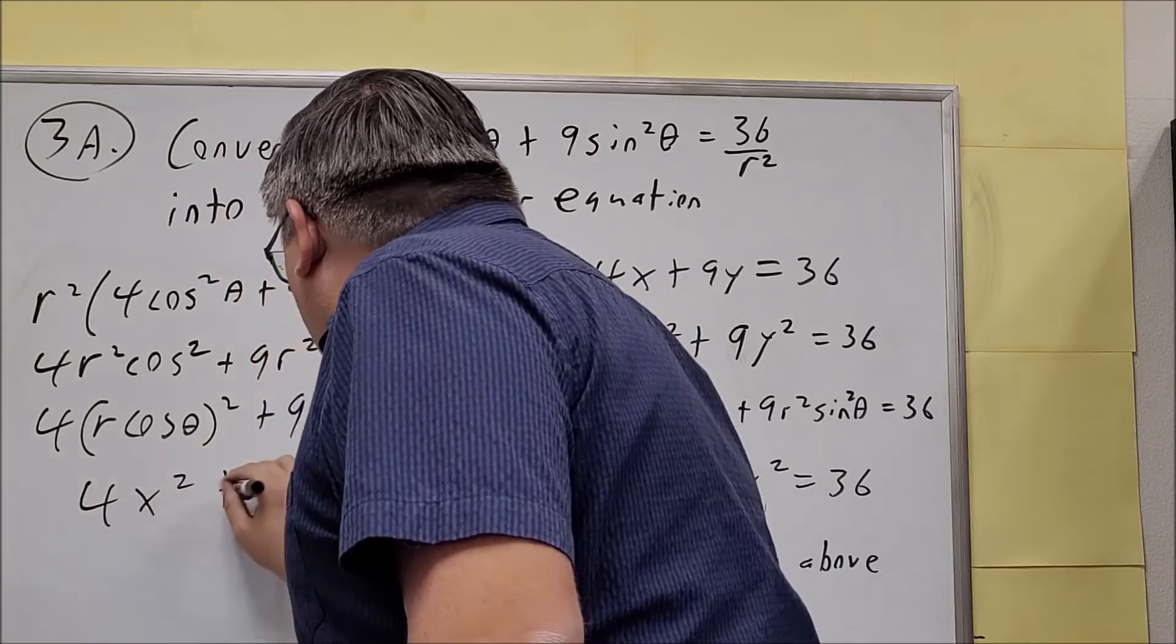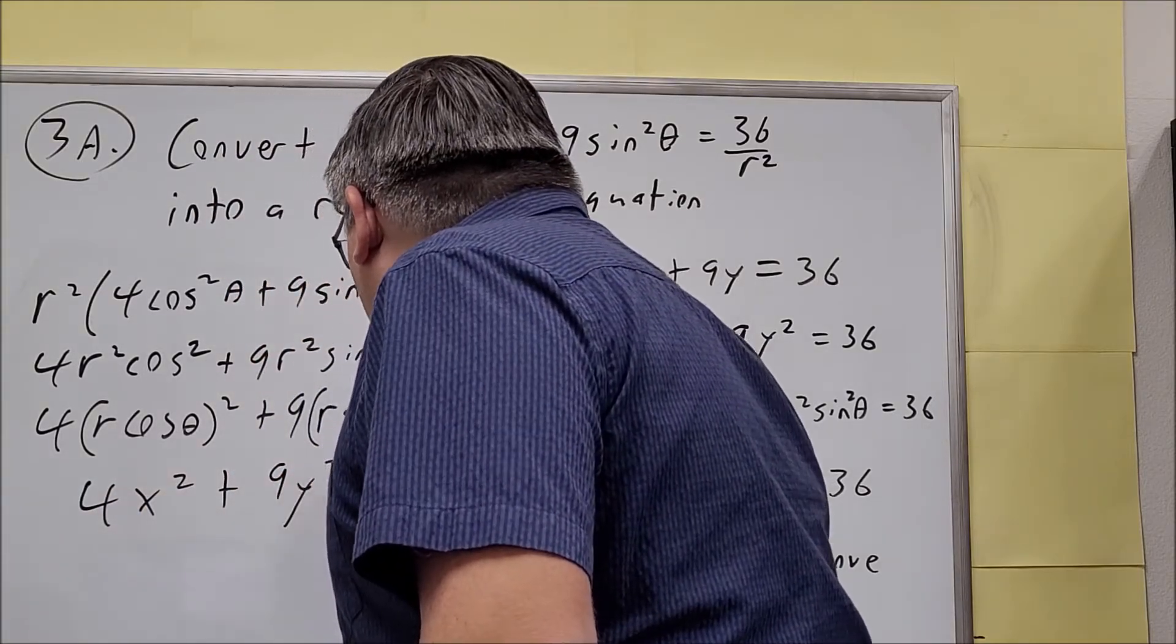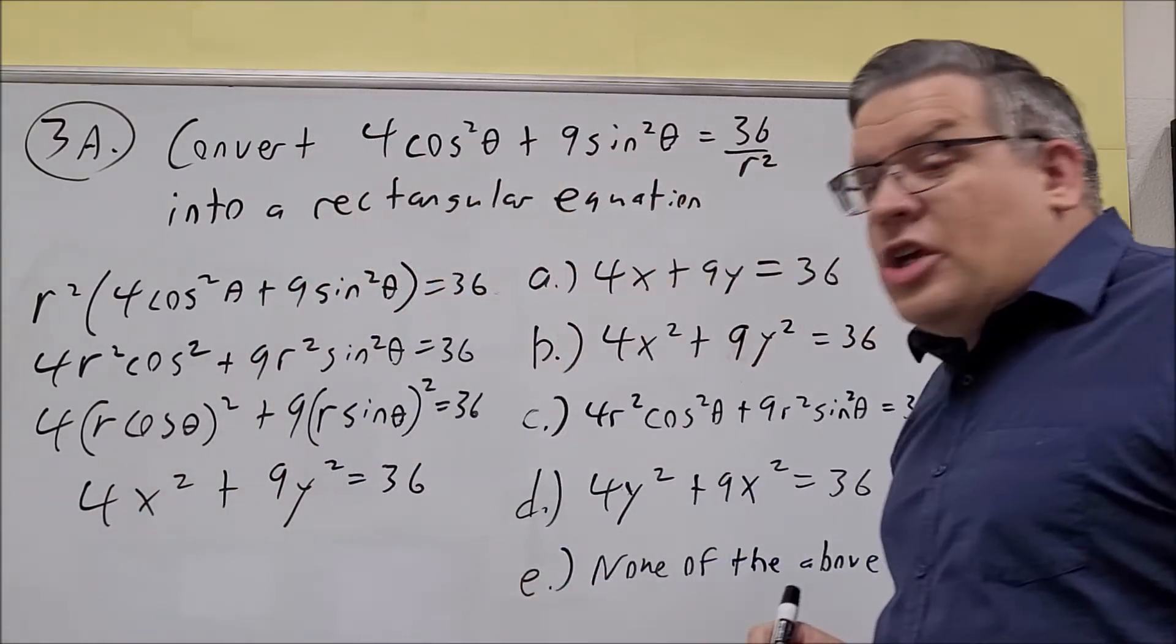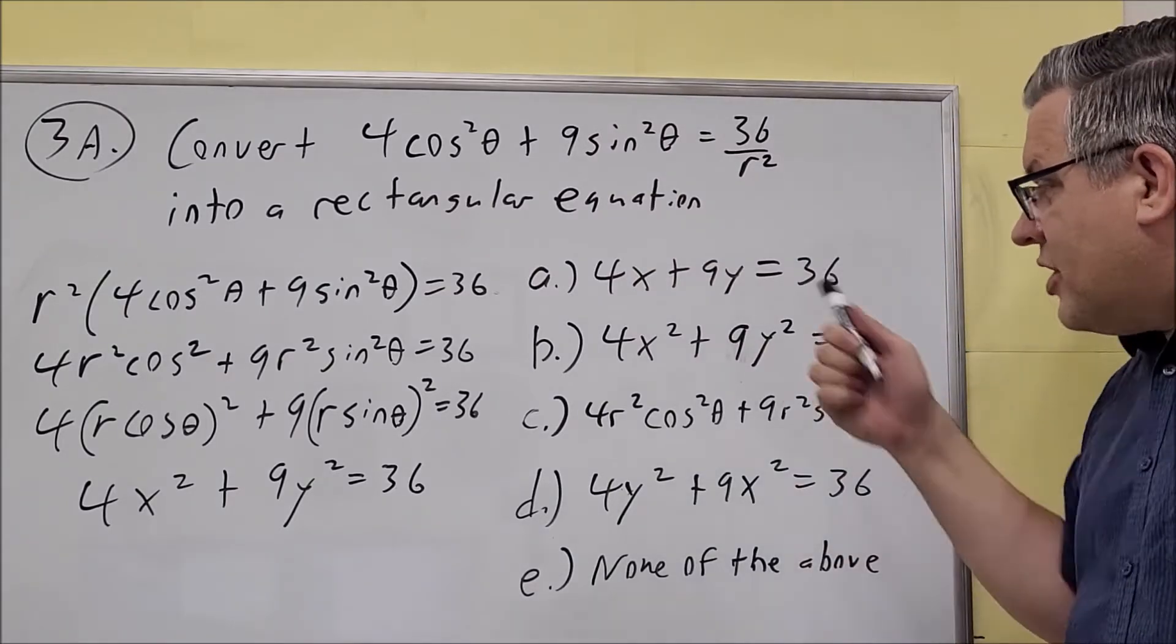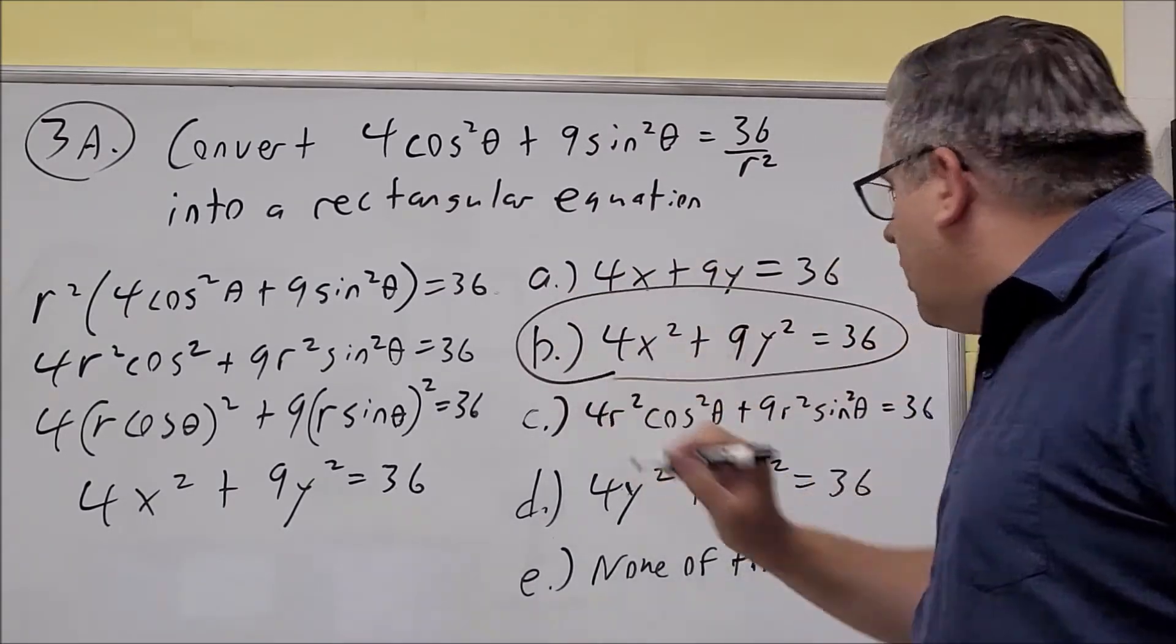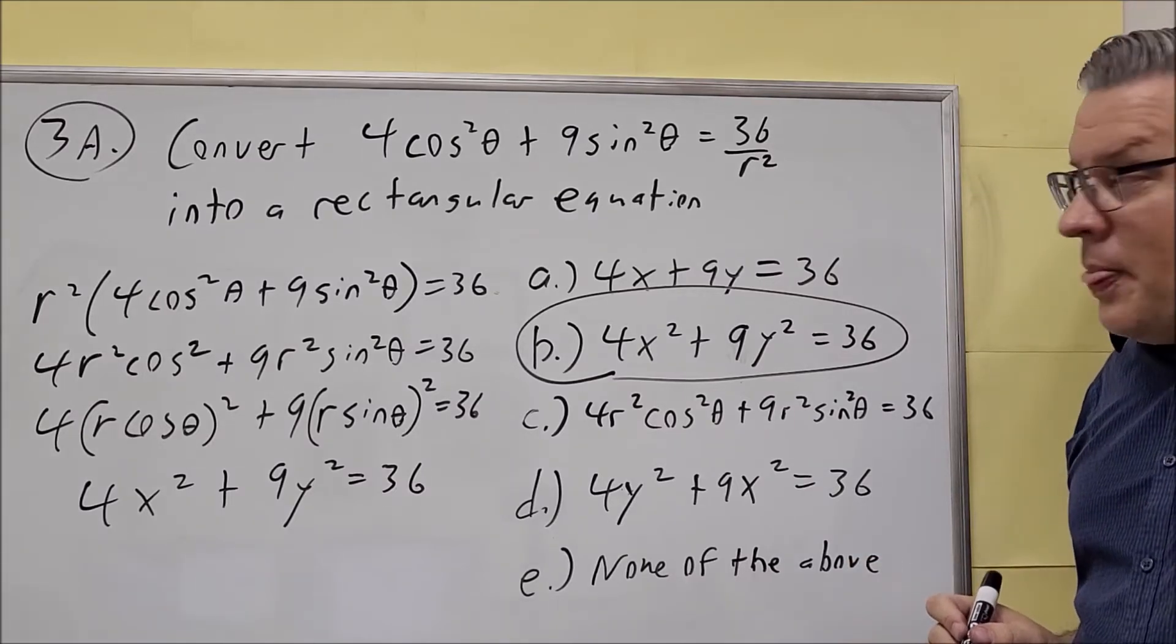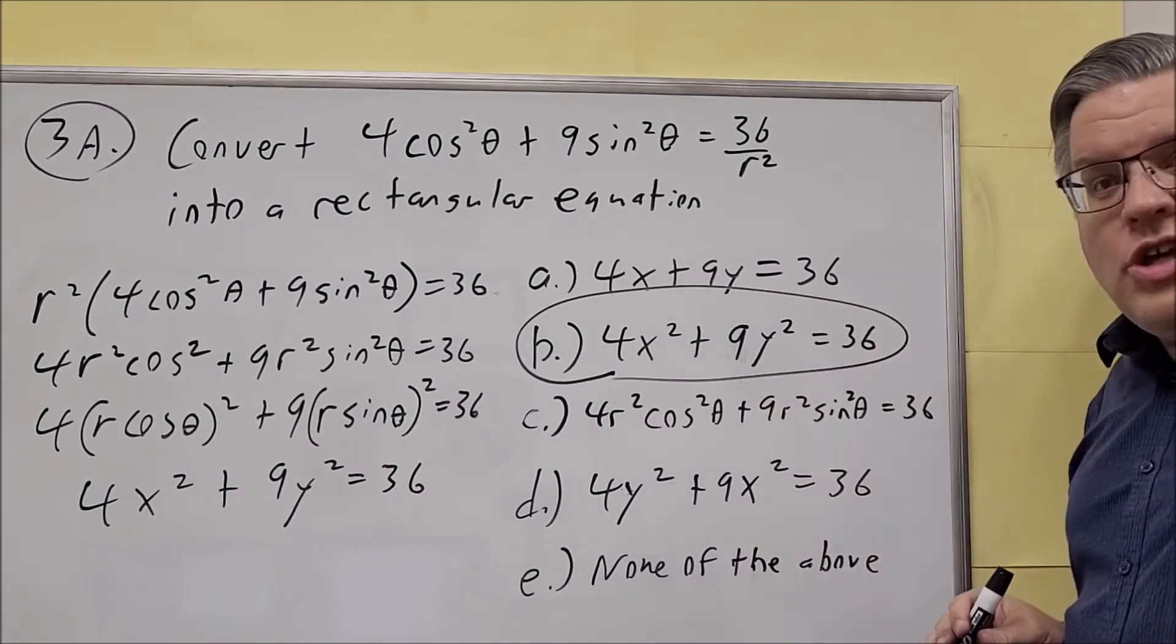So we're at 4x squared plus 9y squared equals 36. That means that b is going to be our correct answer here. So this would be the answer for a rectangular equation.